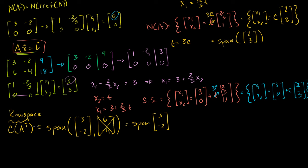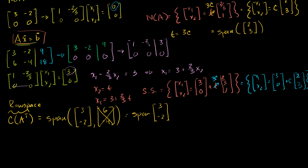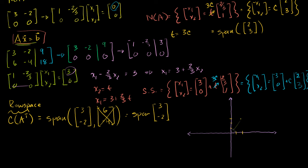Let's graph all of these — the row space, the solution set, and the null space. The null space is all multiples of 2, 3. If we go out 2 and up 3, the vector 2, 3 looks like this in standard position. All multiples of that vector give a line — every point on that green line is reached by some multiple of the vector 2, 3. That line is the null space of A.